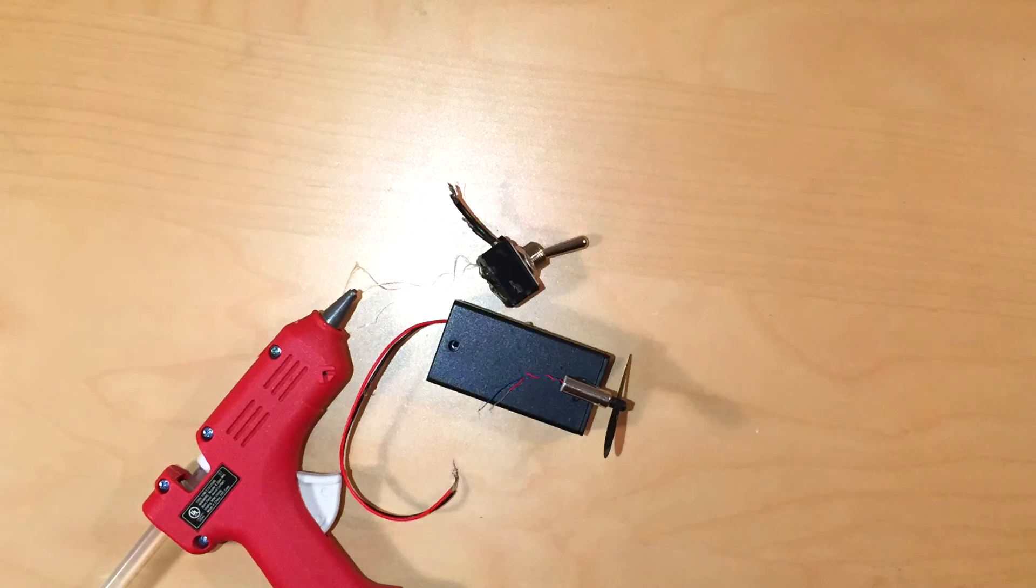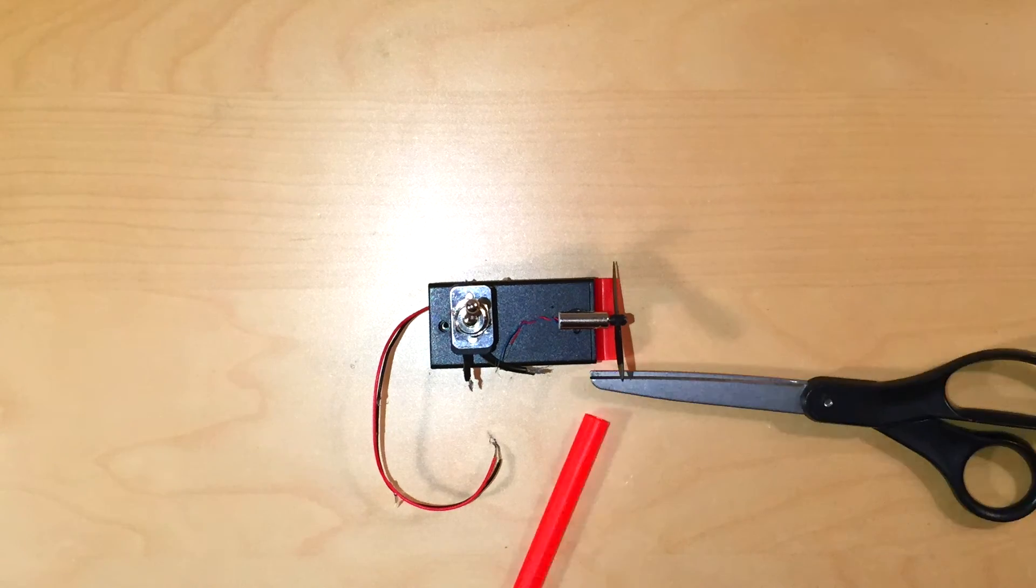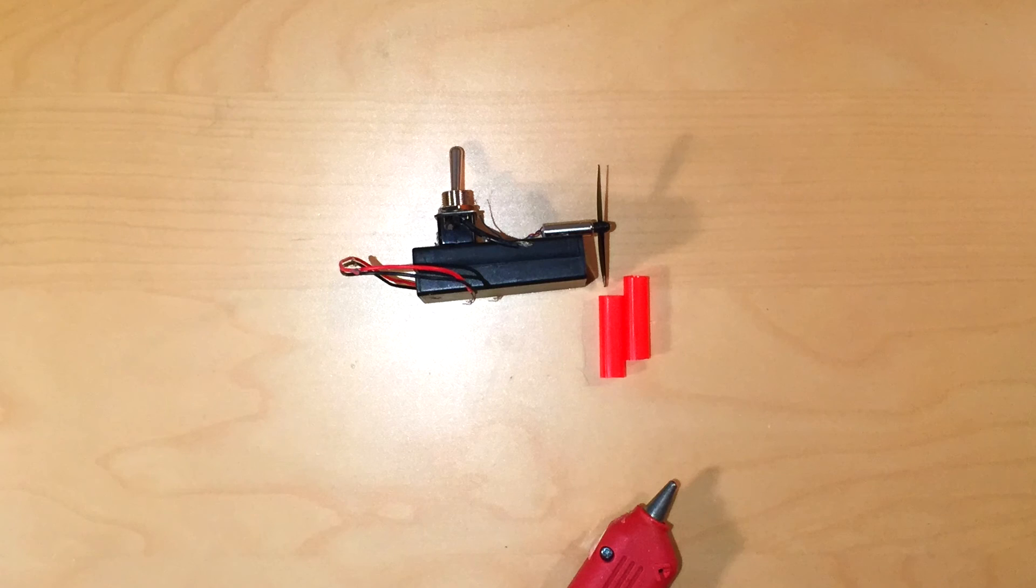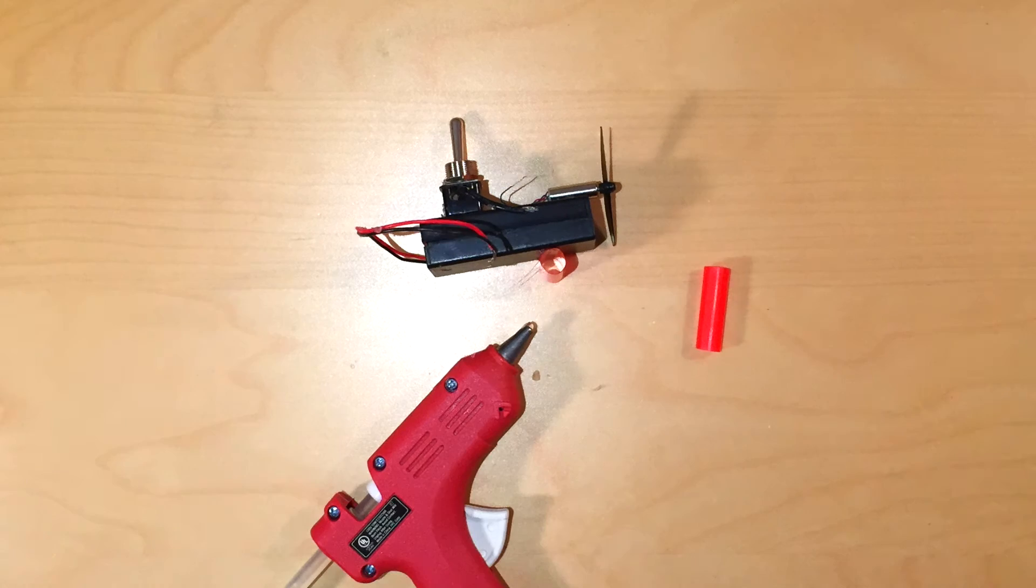Next, glue the toggle switch to the other end of the battery pack. Now cut a straw into pieces that are as long as the width of the chassis. Glue one piece to about half an inch or a little under one and a quarter centimeters away from the front of the battery pack so that the wheels don't hit the propeller.